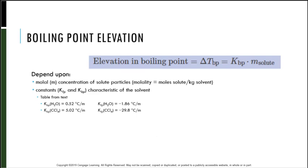Another colligative property we will investigate is how the boiling point of a solution varies with solute concentration. A simple relationship exists: the boiling point elevation, shown by delta T_BP, is directly proportional to the molality of the solute. In this equation, K_BP is a proportionality constant called the molal boiling point elevation constant, with units of degrees Celsius per molal. Values of K_BP have been determined experimentally and are available in a table in your book.